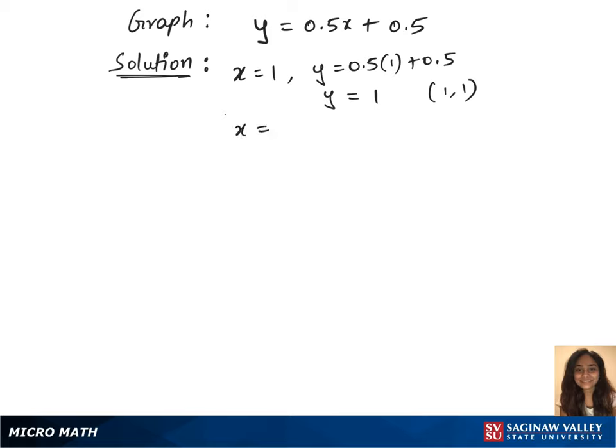Let's substitute x = 5 now, which gives us y = 0.5 times 5 plus 0.5, which is y = 3. We have our second point, which is (5, 3).